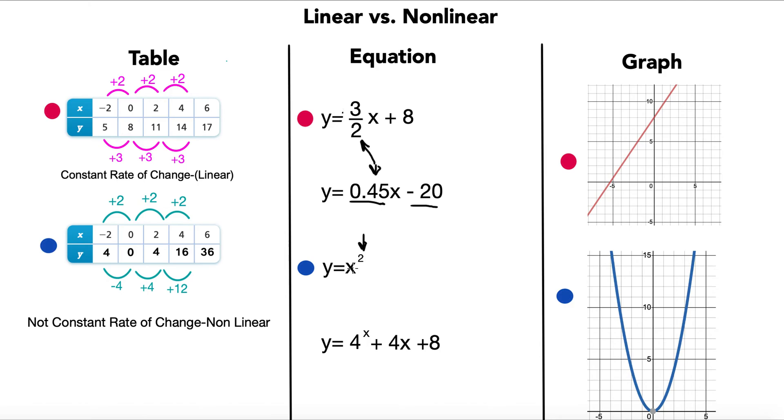Negative 2 squared. So negative 2 times negative 2 is positive 4. 0 times 0 is 0. 2 times itself, 2 squared, is also 4. 4 squared is 16. And 6 squared is 36. So this blue equation here matches the blue table to the left. It has a non-constant rate of change, and therefore, nonlinear.